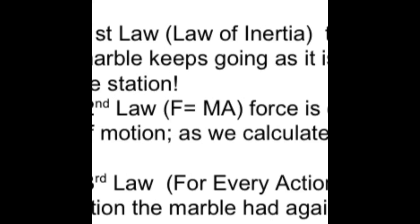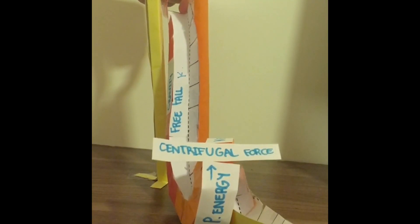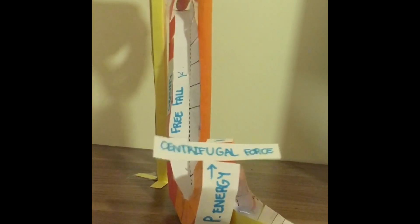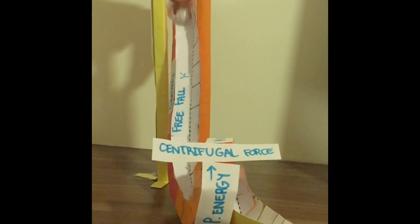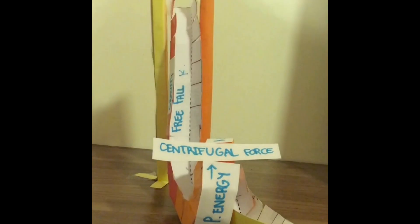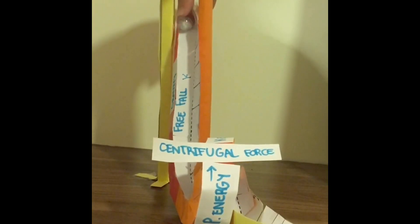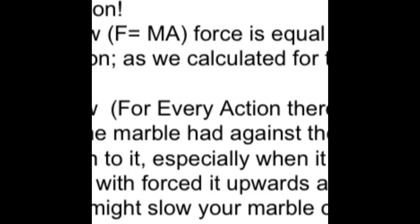Next is Newton's second law. This would be best represented by when we calculated the mass of the marble and used the mass to find the best hill and angle for enough force to move through the loop, because force is equal to mass times acceleration. Last is Newton's third law. For every action or force the marble had against a track or anything, there was an equal and opposite reaction to it, like the bounce when it reaches the station.